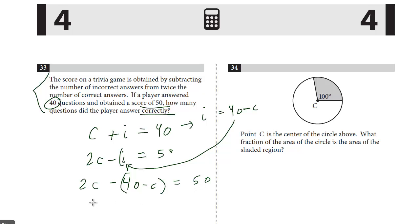We're only dealing with C. So we have 2C minus 40 plus C equals 50. You want to be careful with your sign. Then we add up the Cs. We have 3C. We add 40 to both sides and we get 90. And so C is 30. That is the answer.